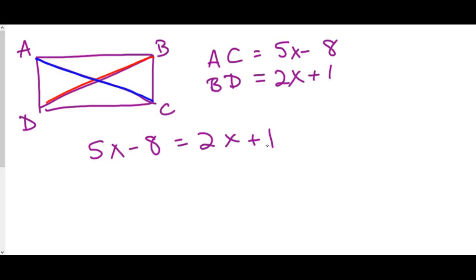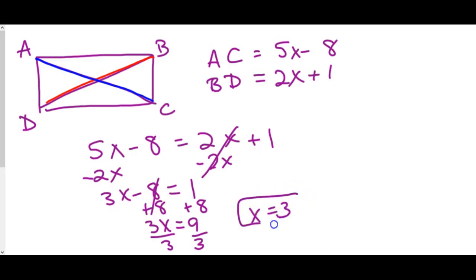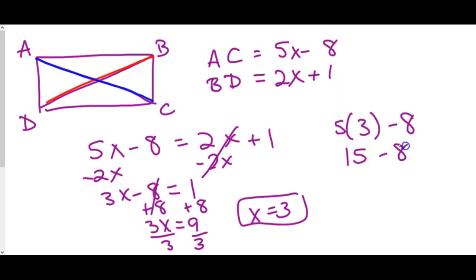They may ask you to find x or find the length. To solve for x, subtract 2x from both sides, add 8 to both sides, then divide by 3 — so x equals 3. If they ask for the length, plug back in: 5 times 3 minus 8 equals 15 minus 8, which is 7. So the length of the diagonals is 7.